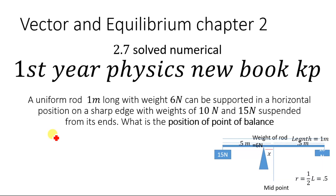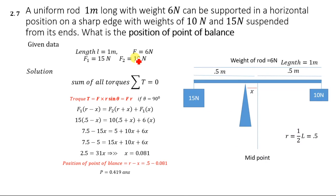Hello everyone, welcome to EasyEdu. Today we are going to solve numerical number 2.7 from the first year physics book. According to the numerical, a uniform rod one meter long with weight six newton can be supported in a horizontal position on a sharp edge with weights of 10 newton and 15 newton suspended from its ends.